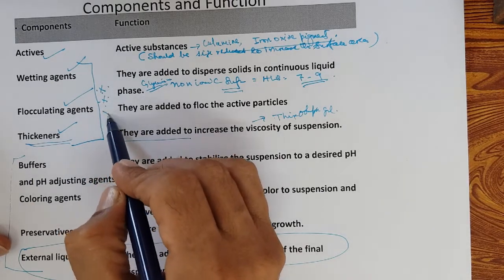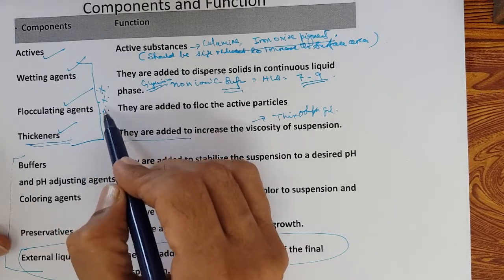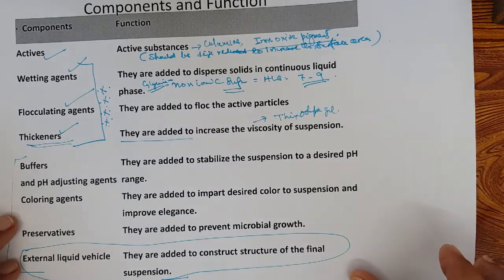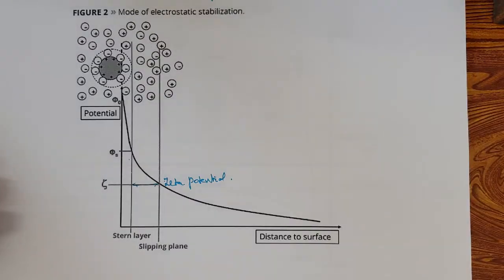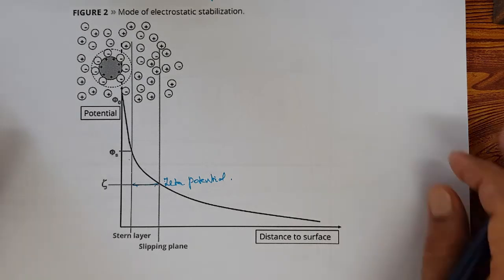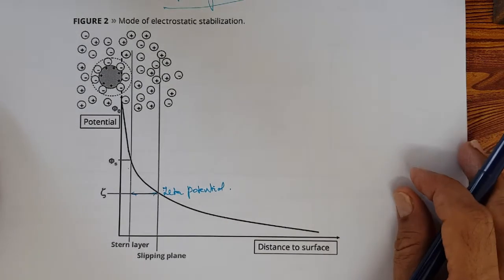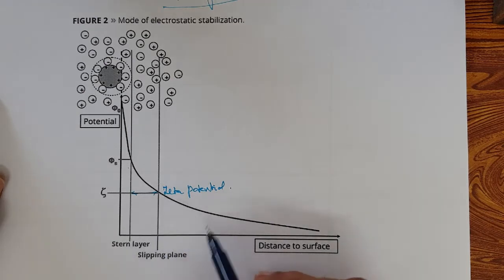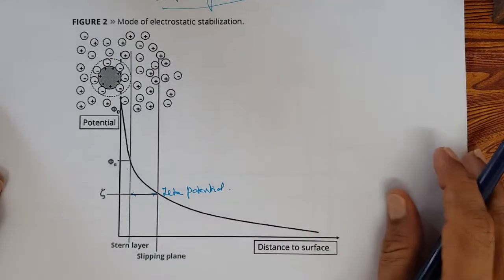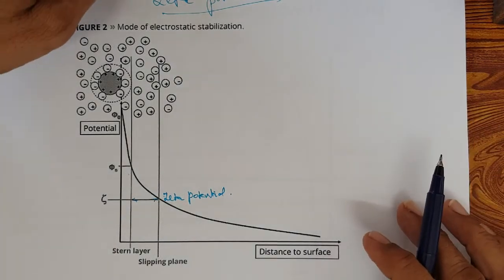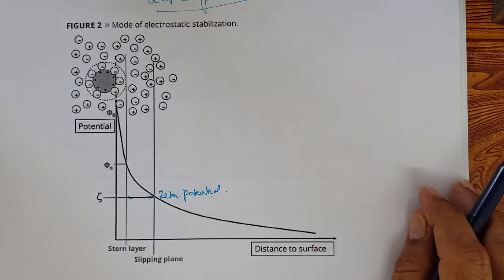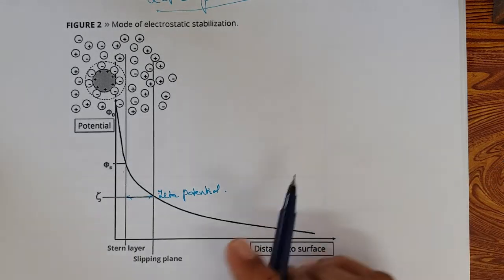The selection of these ingredients for your product is very, very important. Now, we studied zeta potential — the potential measured at the slipping layer. When we studied the theories of emulsification, we studied the zeta potential.